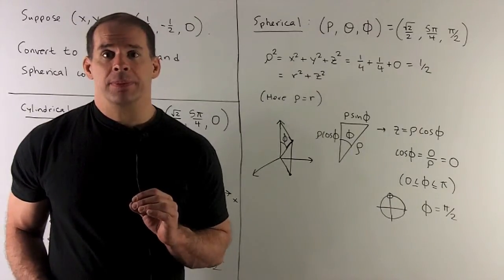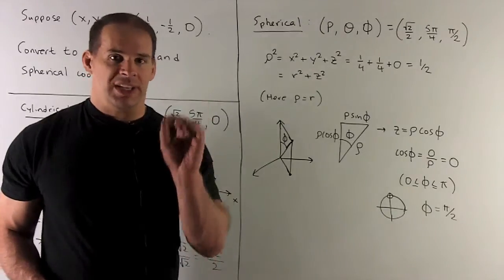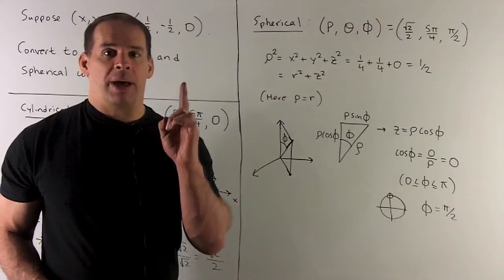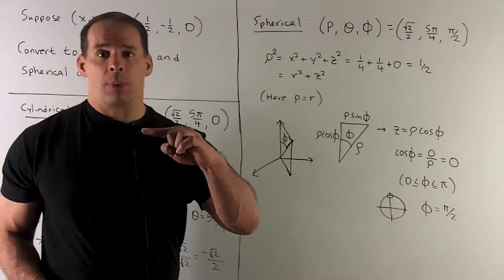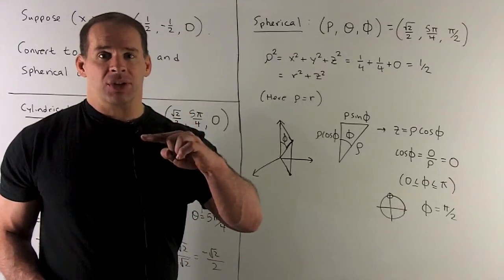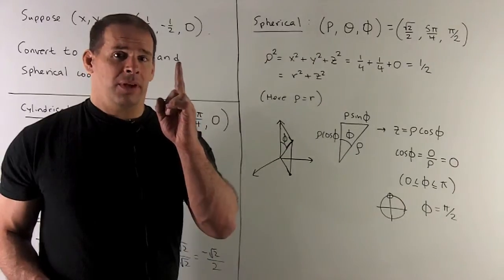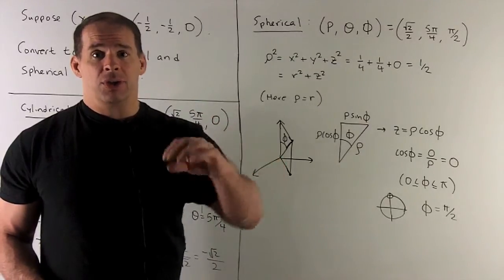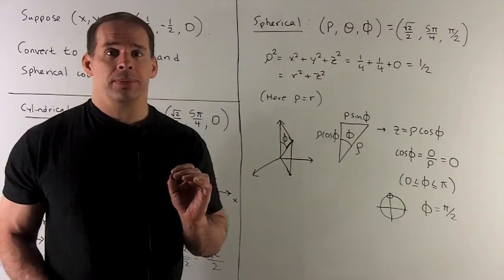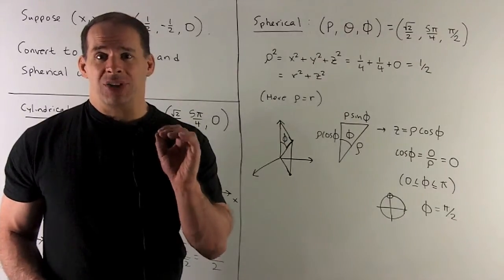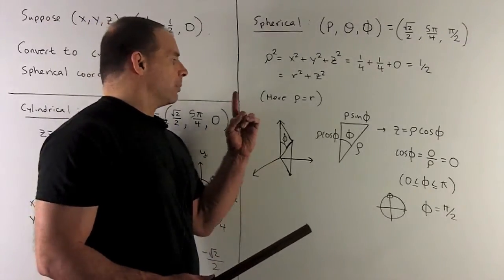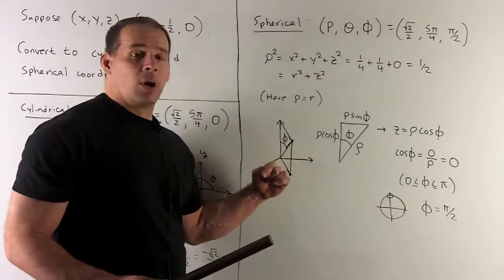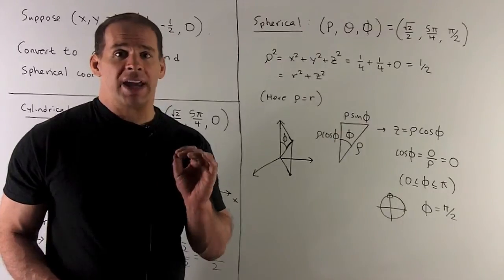The only thing left is phi. Phi is found by taking the z-axis and the point — they span a plane. In that plane, I start at the positive z-axis and come down until I hit our point, sweeping out an angle — that's phi. If phi goes all the way down to the negative z-axis, we go from zero to pi, so phi is between zero and pi. Since our point lives in the xy plane, as I come down from the positive z-axis I sweep out 90 degrees, or pi halves. So our phi is pi halves.